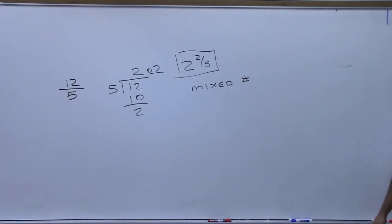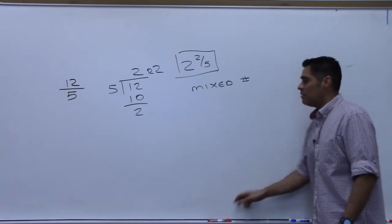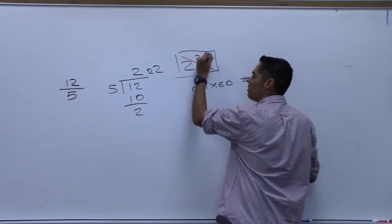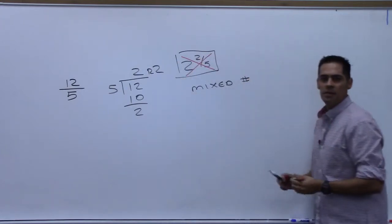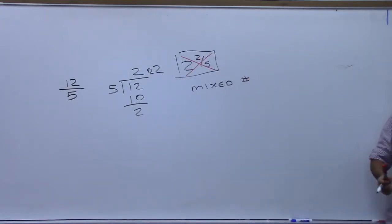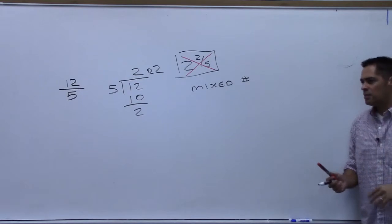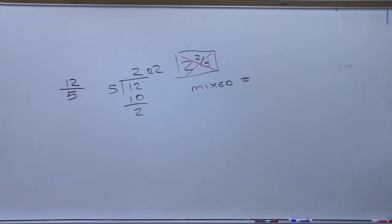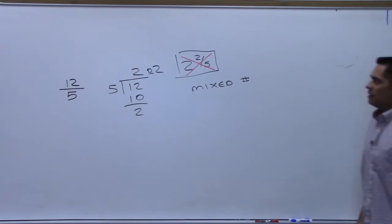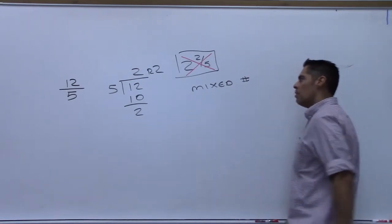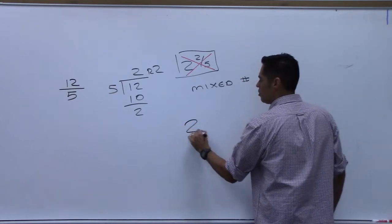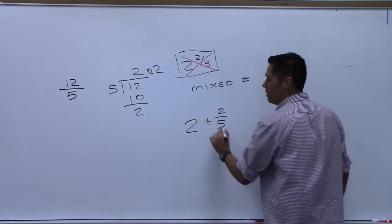It's called a mixed number. And you actually should begin to - well, hate's a strong word - you should just purge these completely from your system. Mixed numbers are not used in pre-cal and calculus. A lot of people don't know what 2 and 2 fifths even means. It means 2 plus 2 fifths. That's what it means.